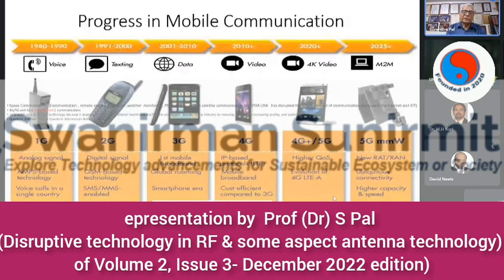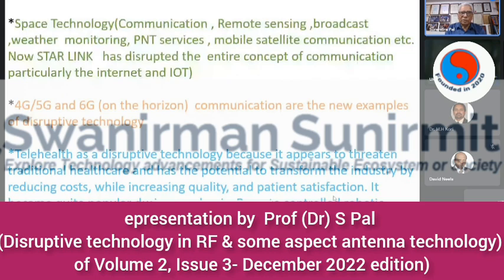Space technology is another area that has disrupted everything. Yesterday a rocket by a private company carried three payloads. In just two to three years, a small company can make a sounding rocket, and in three to four years they may come up with small satellite launchers. Space technology, which was once confined to a few nations, now has more than 100 startups providing satellites. Space technology disruption came in the form of communication, remote sensing, broadcast, weather monitoring, PNT services, and mobile satellite communication — and now Starlink.